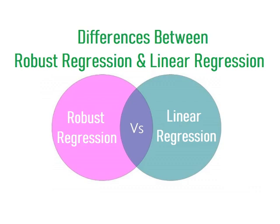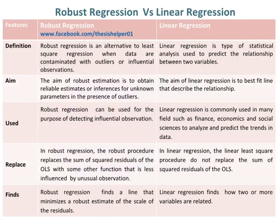Differences between robust regression and linear regression. Robust regression is an alternative to least squares regression when data are contaminated with outliers or influential observations.